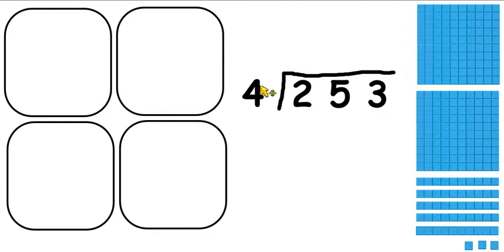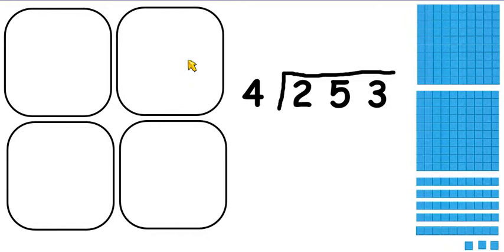And I'm dividing by 4, so I need to split that amount into 4 groups. And when we're dividing, we know that those 4 groups have to be 4 equal groups.